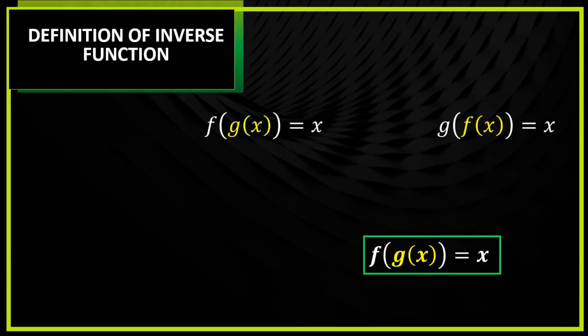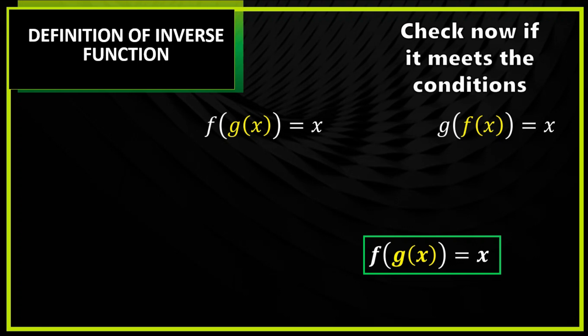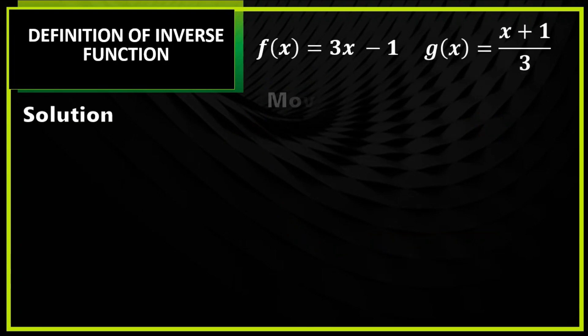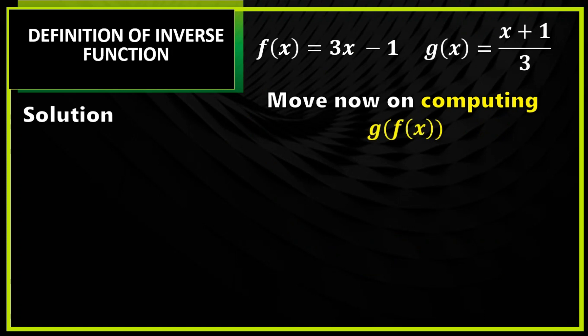And then you will check this against the condition — na-meet ba nya yung condition? Dahil x ang sagot natin, ibig sabihin na-meet nya yung condition, therefore condition 1 is checked. Pag na-check mo na yung first condition, move on ka na agad doon sa susunod na sosolven, which is g of f of x.